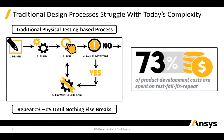The traditional design process involves designing something, building it, testing it, finding issues, and fixing whatever breaks—then repeating that cycle of build, test, fix. This is very time-consuming and expensive. By some estimates, 73% of product development costs are spent on that test-fail-fix-repeat cycle: going through the lab, finding an issue—whether mechanical, thermal, or anything else—fixing it, redesigning, rebuilding, until finally you have a working product.